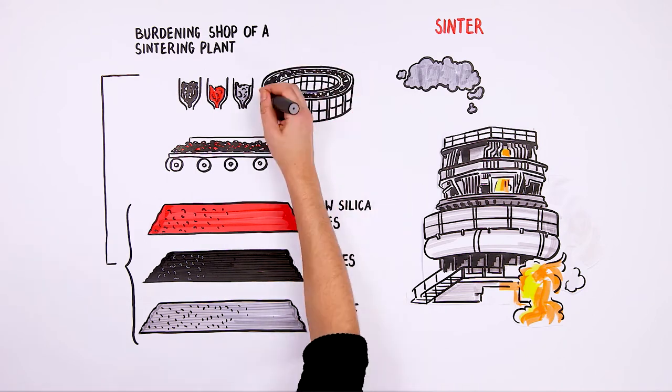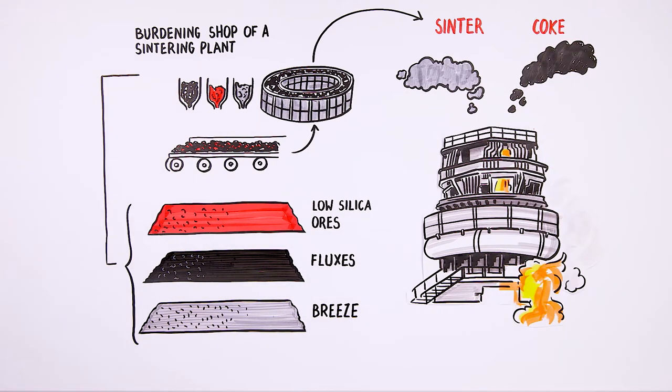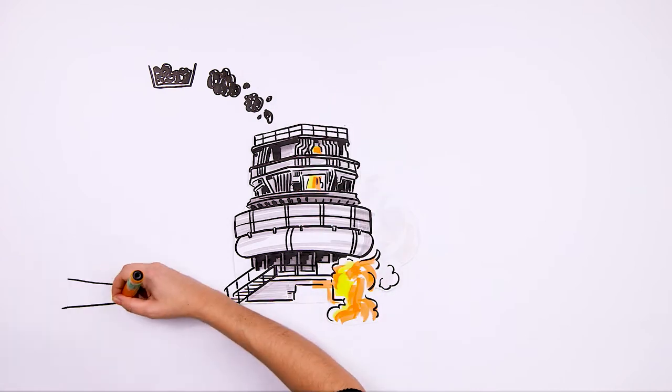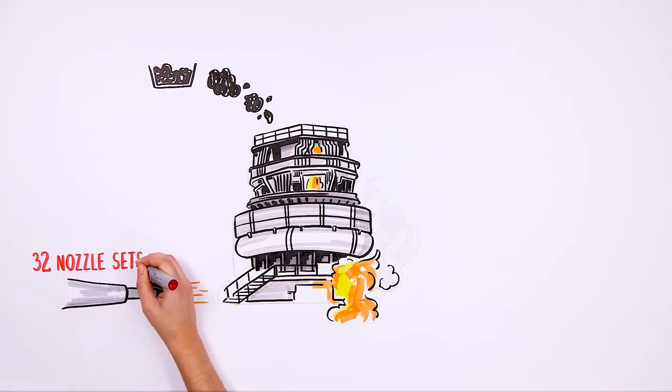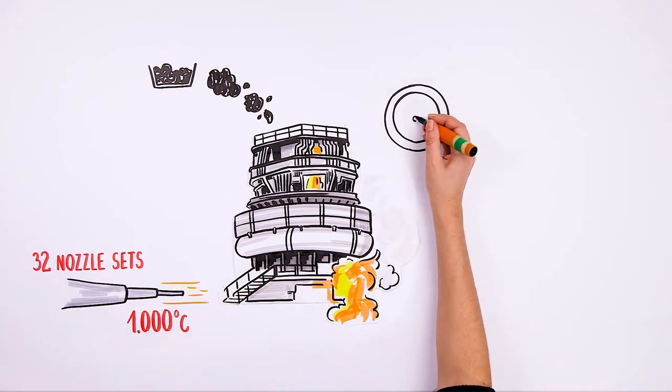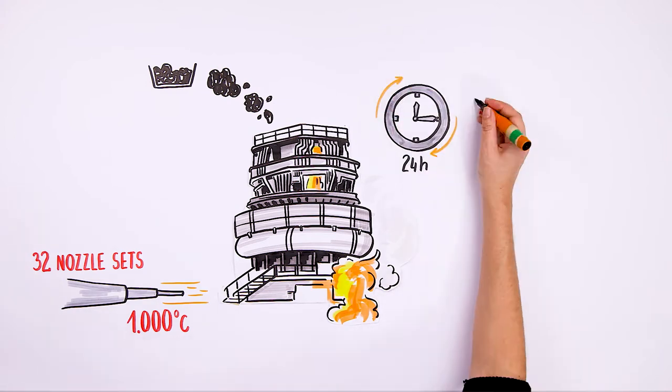Sinter and coke are basic input materials for a blast furnace. The charge is poured into the furnace from the top. At the bottom, nozzle sets blow air into the furnace at the temperature of about 1000 degrees C. This is called a hot blow. At ArcelorMittal steel plant in Dabrowa Gornicza, each furnace is equipped with 32 nozzle sets.